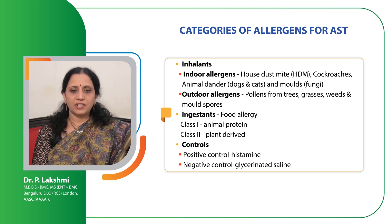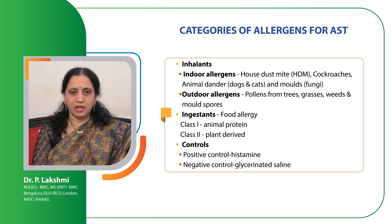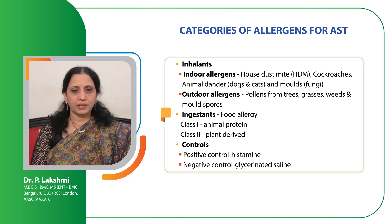Common outdoor allergens include pollens from trees, grasses, weed pollens, and mould spores. For ingestants, whenever there is a history of food allergy we have to check for animal protein allergens and plant-derived protein allergens — there are class 1 and class 2 proteins. We also always have to include a positive control of histamine and a negative control of glycerinated saline.